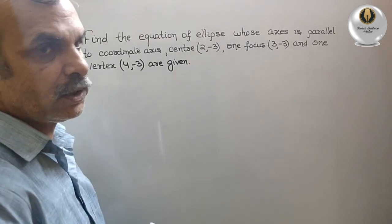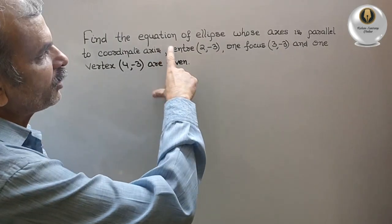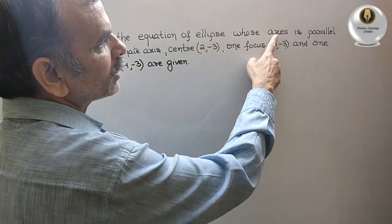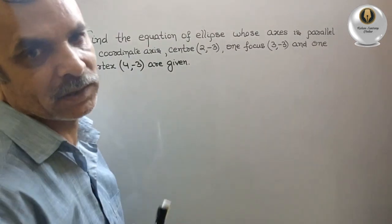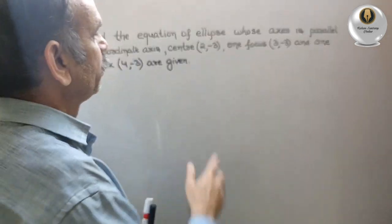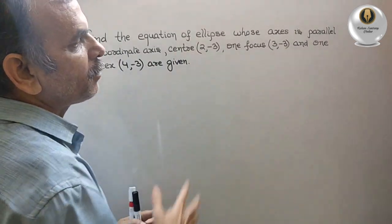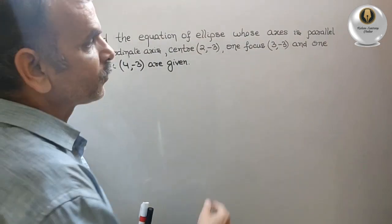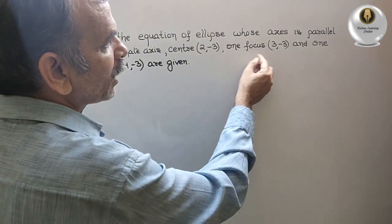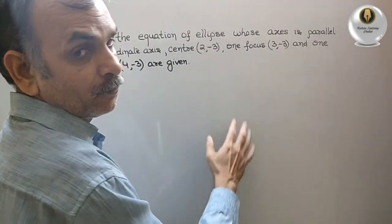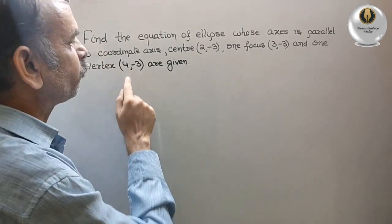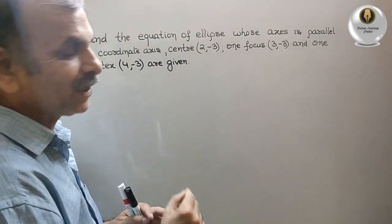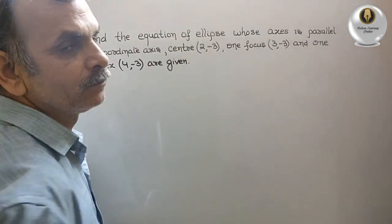Your question is: find the equation of an ellipse whose axis is parallel to the coordinate axis. The center is (2, -3), one focus is (3, -3), and one vertex is (4, -3).